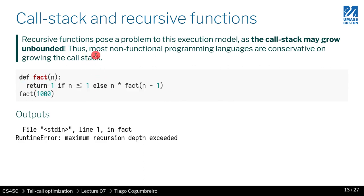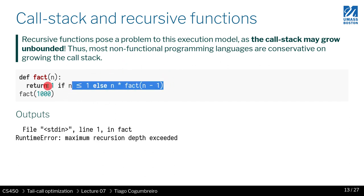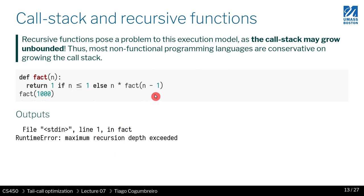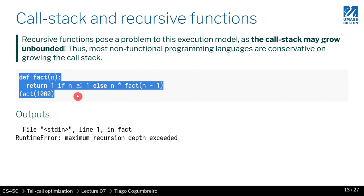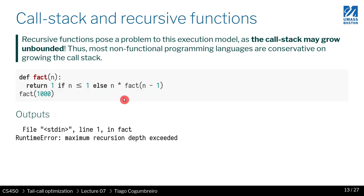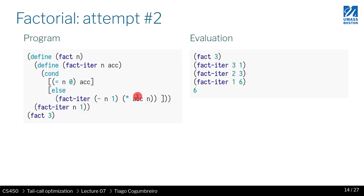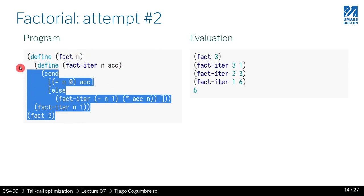In functional programming, recursion is crucial — it's the only way to compute since there are no loops. So a solution to the stack growth problem is essential. For example, computing factorial of a thousand in Python gives a maximum recursion level error — non-functional languages just set a maximum stack depth and throw an exception if you exceed it. But if you write this in Racket, it handles it correctly.